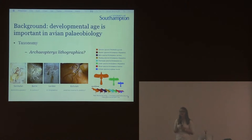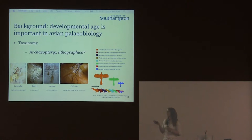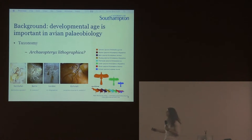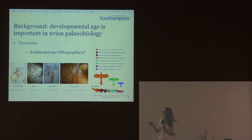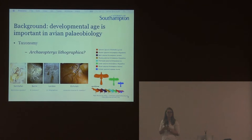There have been 12 specimens of Archaeopteryx found, but the size range of those is huge. The largest specimens of Archaeopteryx are not far off seven times bigger than the smallest, which has led some people to say that they're different species, sometimes even different genera.